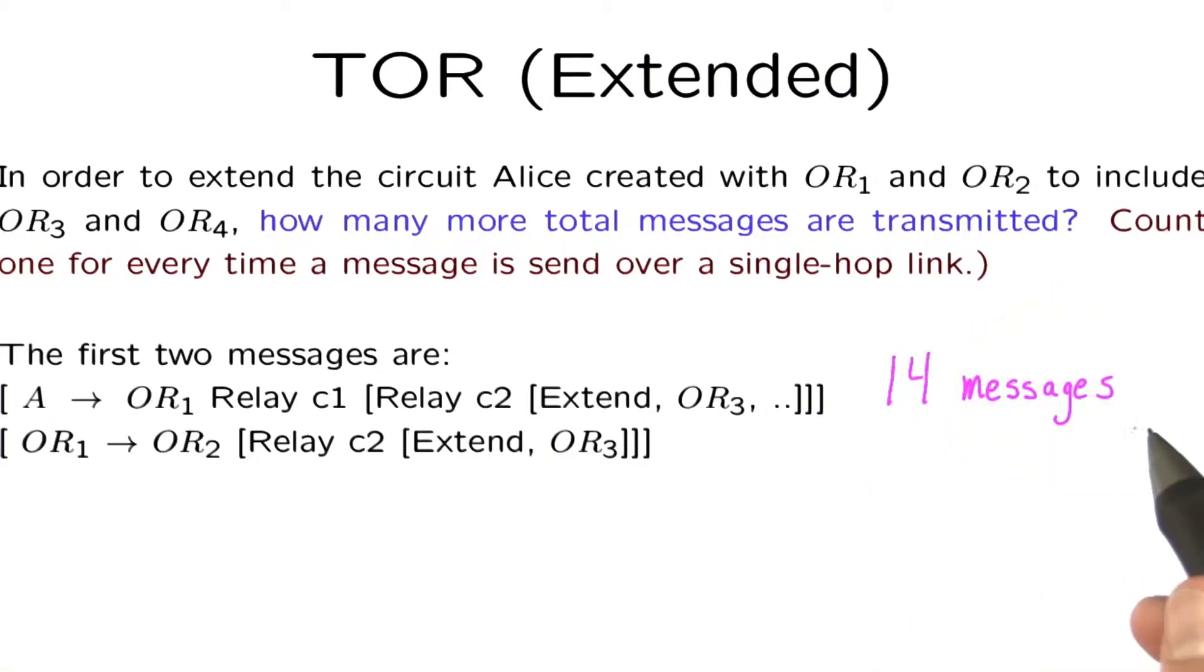And the answer is 14 messages. In the first message, Alice is essentially telling OnionRouter1 to tell OnionRouter2 to extend to OnionRouter3.